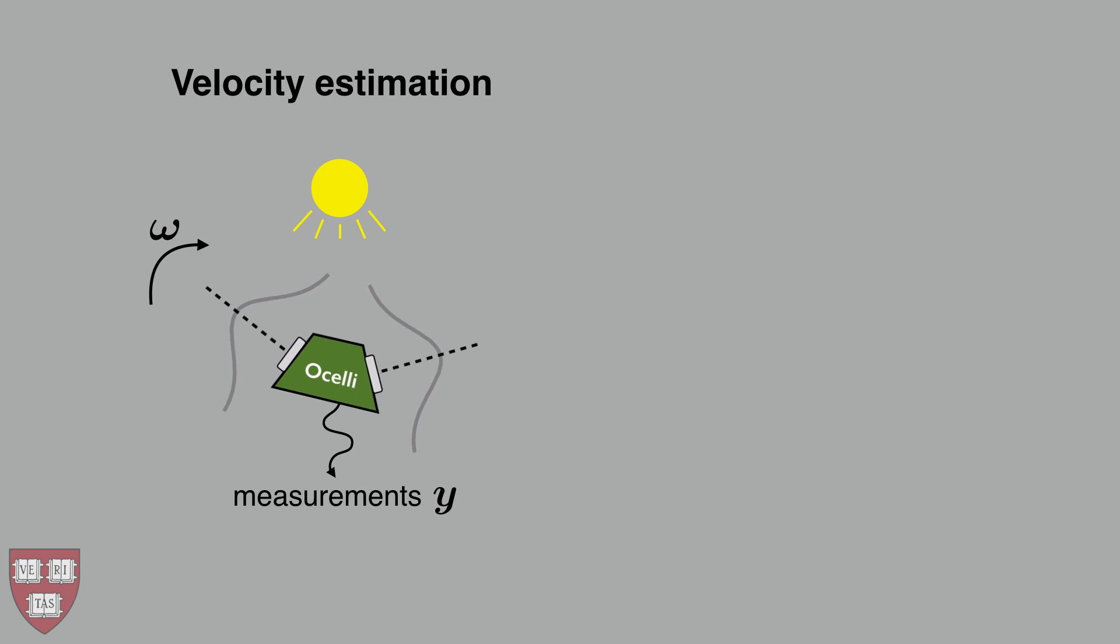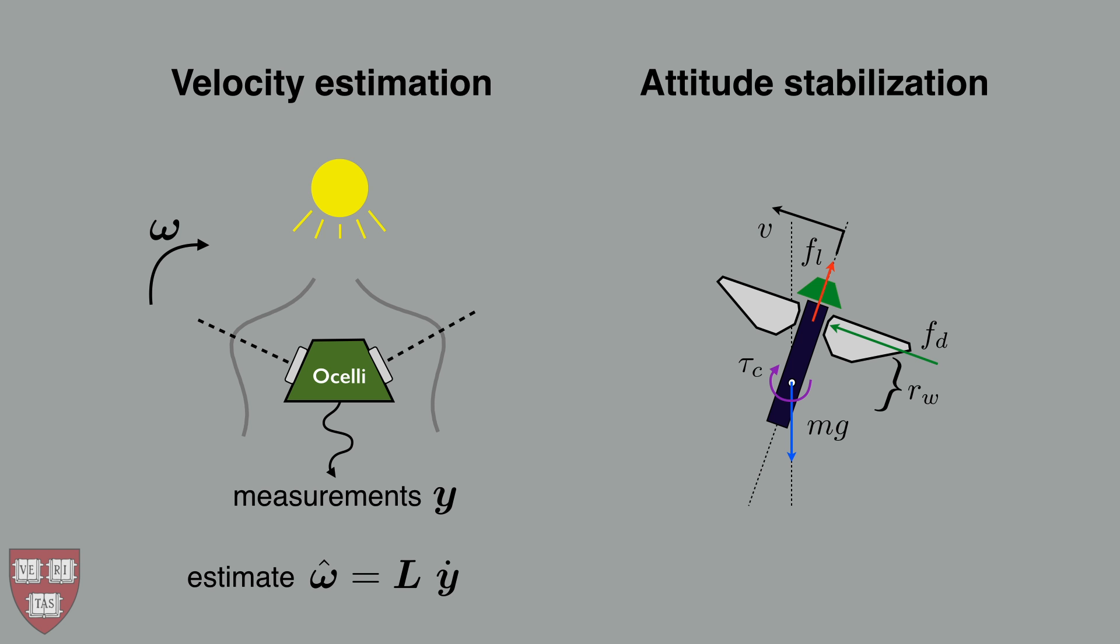By comparing changes in sensor readings from different photoreceptors, the ocelli sensor can estimate angular velocity. We derive a model of the aeromechanics of the robotic insect that shows how it can be stabilized using a damping action that is proportional to its angular velocity.